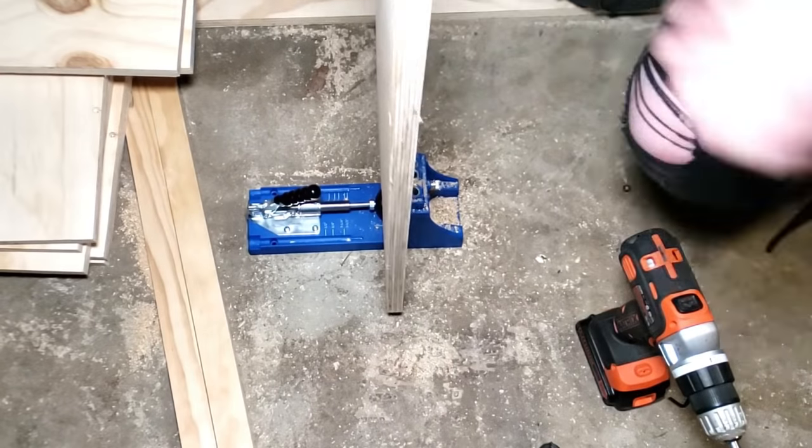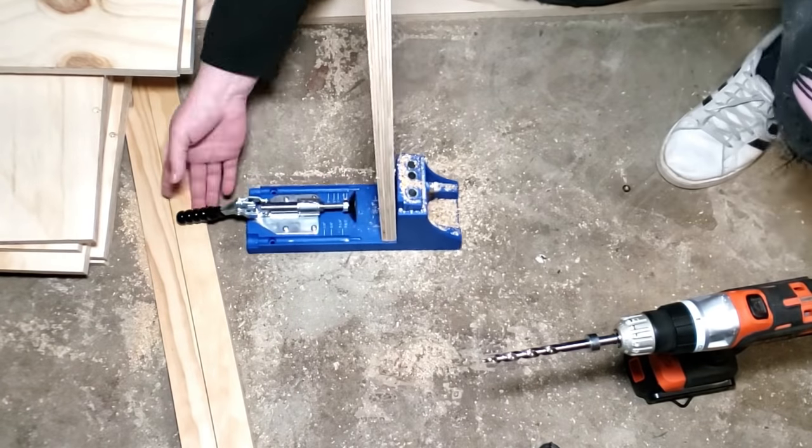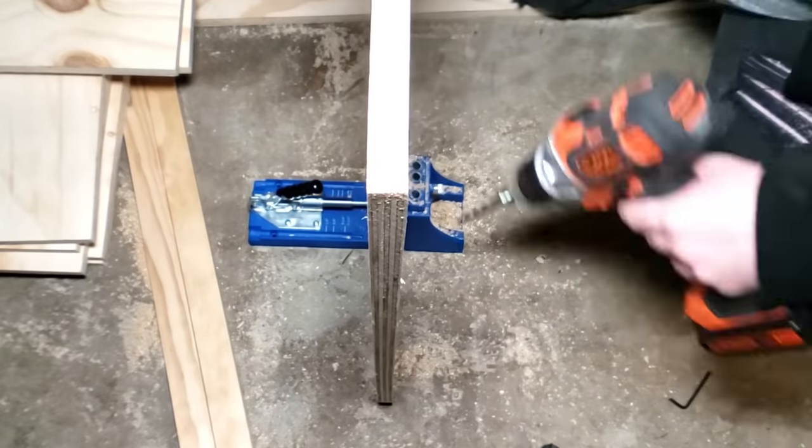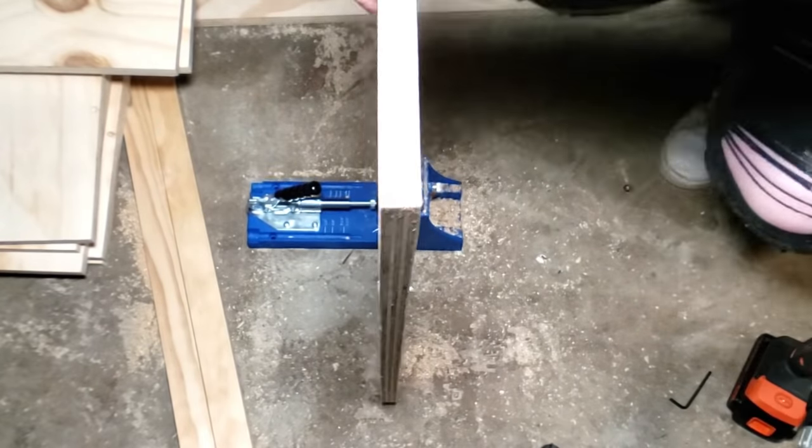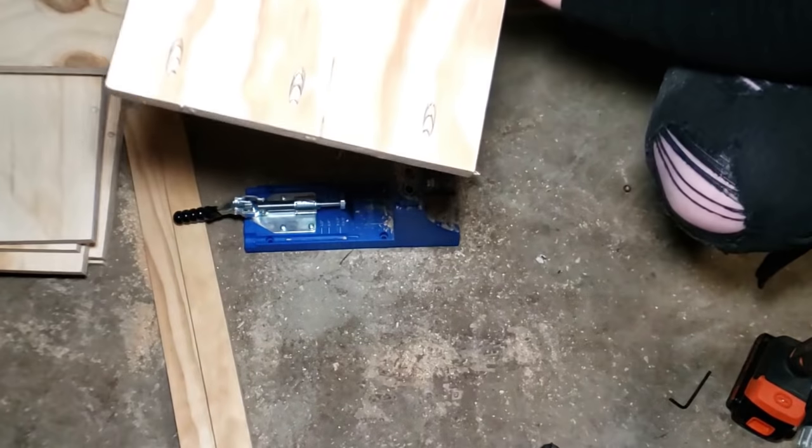The smaller shelves on the side need to be secured to the longer shelf on the back wall. I added pocket holes on the underside of the smaller shelves just on the one side that will touch the other shelf. The other side and the back will attach to the cleats.